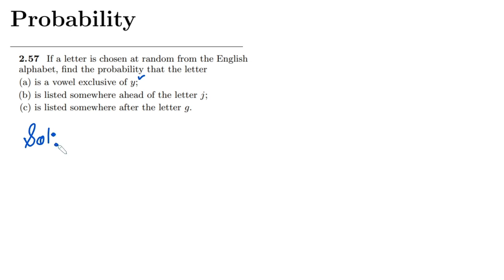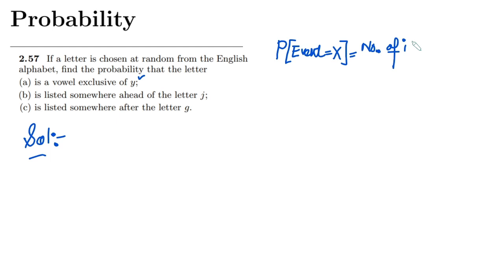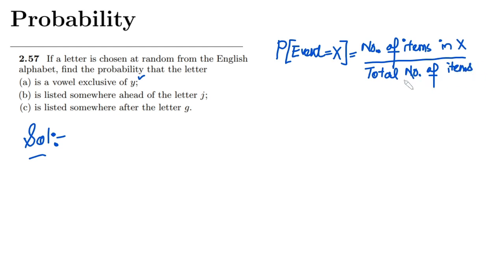So what will be the strategy here? Let me first write the generic formula for finding the probability of situations or events like this one. In order to find the probability of event X, I have to write the number of items in X divided by the total number of items which are basically in the sample space.